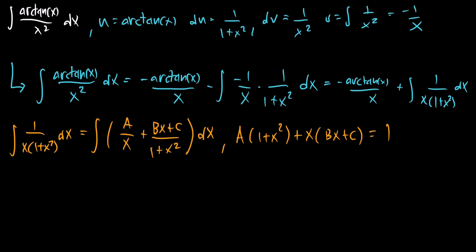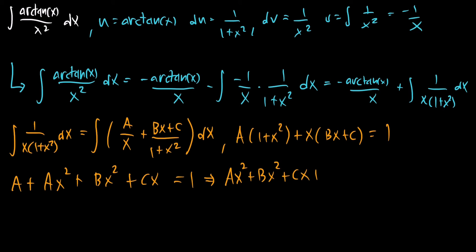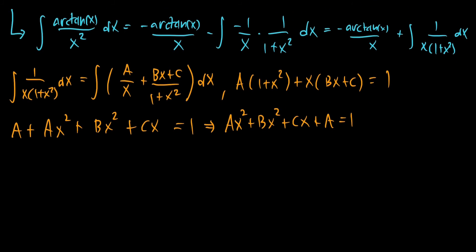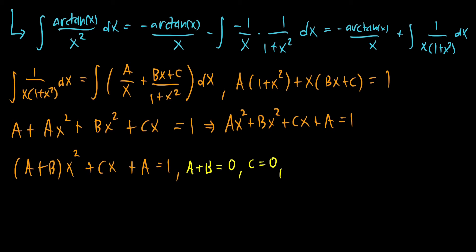Now we have to solve for a, b, and c. Expanding the terms gives a plus ax squared plus bx squared plus cx equals 1. Rewriting: ax squared plus bx squared plus cx plus a equals 1, which factors as a plus b times x squared plus cx plus a equals 1. For this to be true, a plus b must equal 0, c must equal 0, and a equals 1. Since a equals 1, then 1 plus b equals 0, which means b equals negative 1.